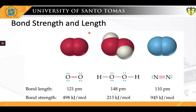In molecular geometry, bond length or bond distance is defined as the average distance between the nuclei of two bonded atoms in a molecule. It is a transferable property of a bond between atoms of fixed types, relatively independent of the rest of the molecule. In stable molecules, attractive and repulsive forces are in balance, and thus bond lengths are dependent on bond strength, which is influenced by the number of bonds between atoms. Bond lengths are measured in picometers.